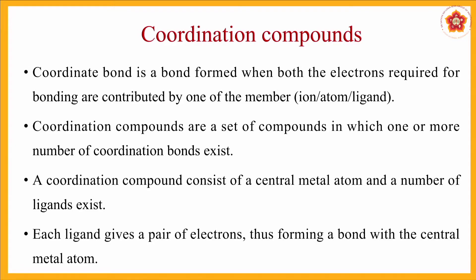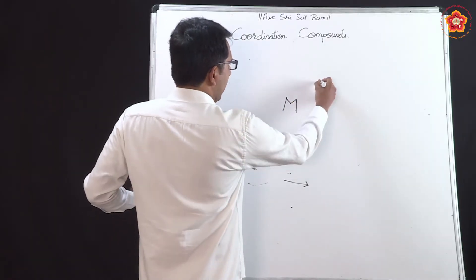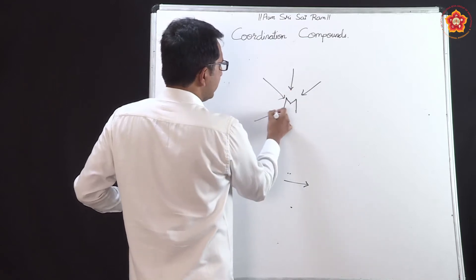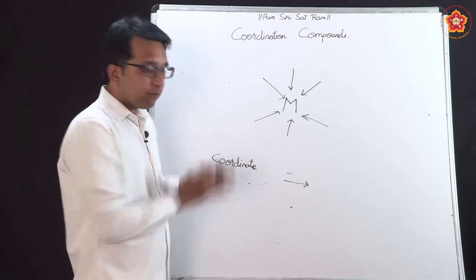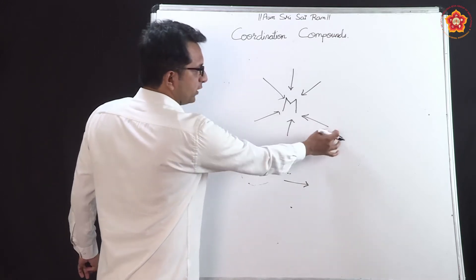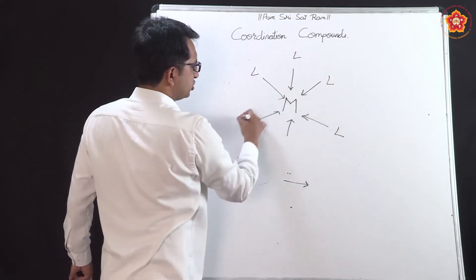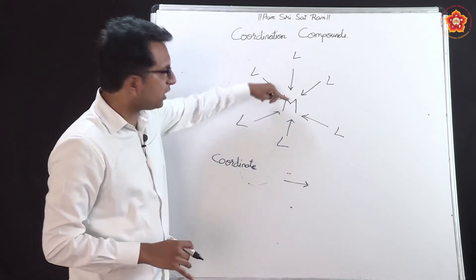Let us see some important points about coordination compounds. What are they formed of? They are mainly formed by a coordinate bond, which requires a shift of a pair of electrons. We come across terminologies like ion, atom, and ligand. These coordination compounds need one central metal ion at the center, and to this central metal ion various species can give lone pairs of electrons. A species generalized as L will give a pair of electrons to the central metal ion.